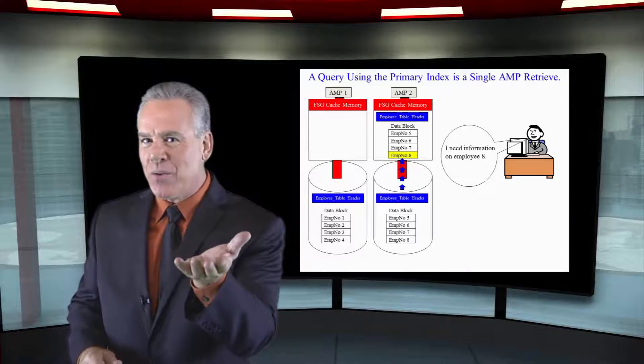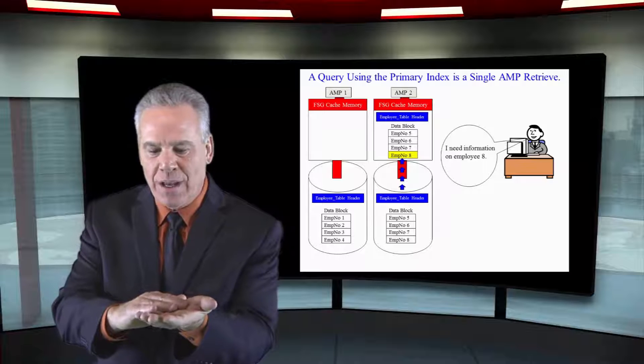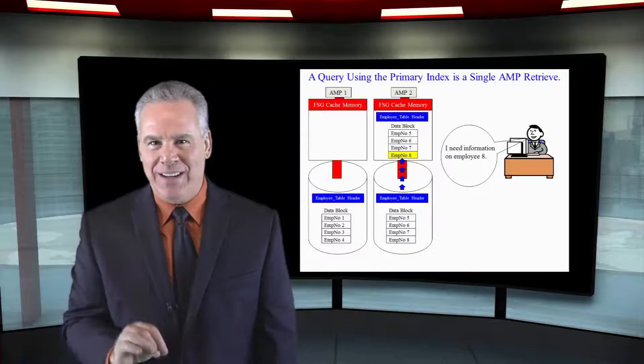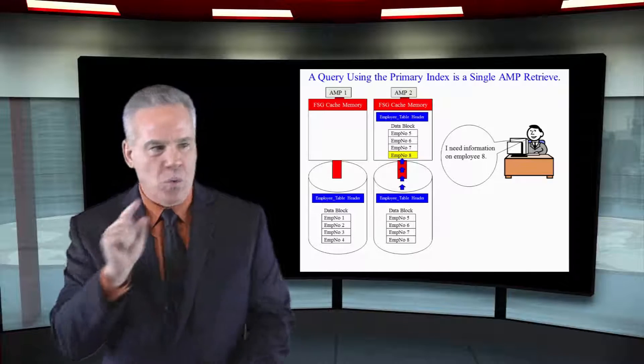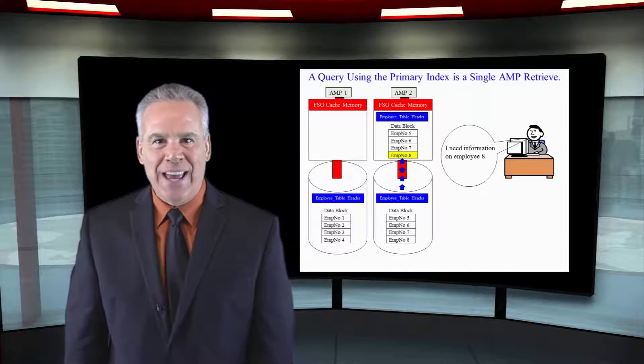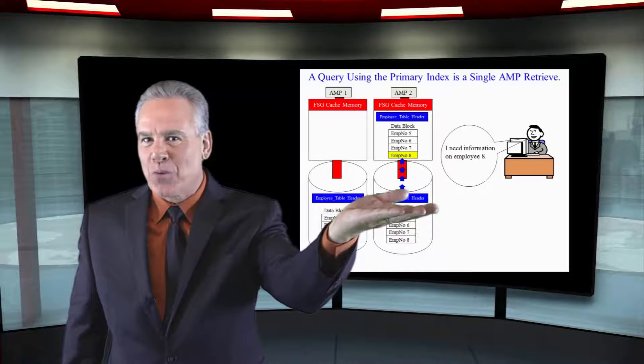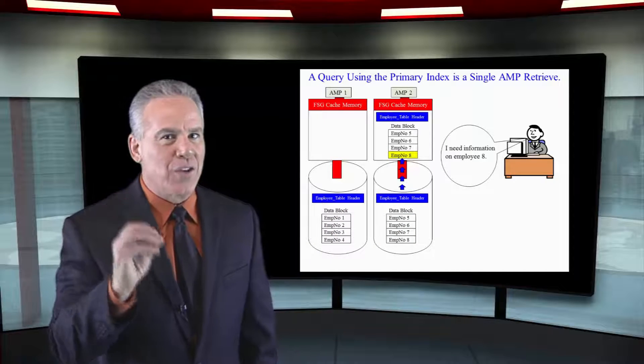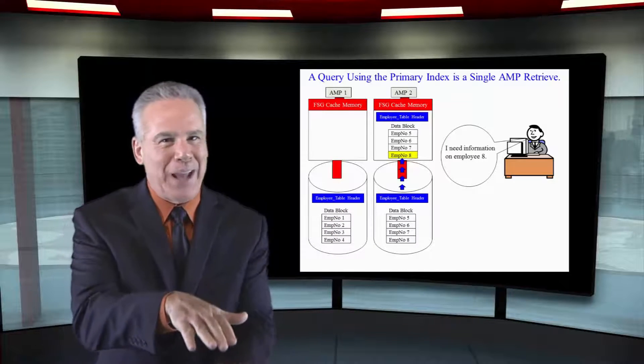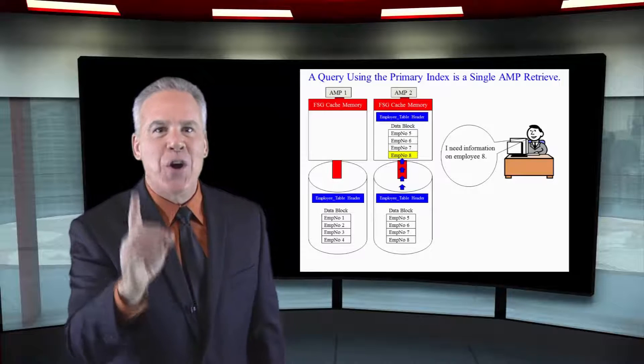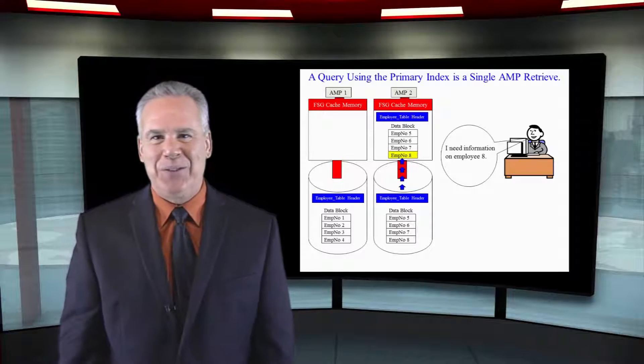And the parsing engine gets that query and says, you know what? Employee number is the primary index. Hash eight. Ooh, go to amp number two. Just bring in one block and that is your first great example of performance tuning through much less block movement. In this case, only one every single time.